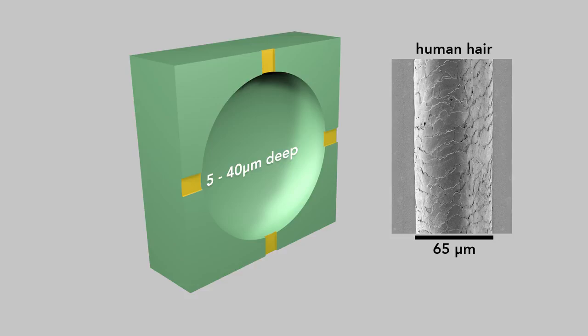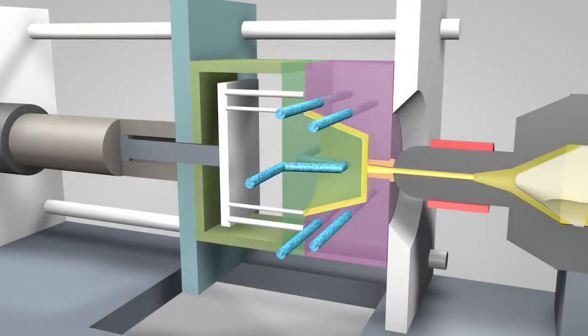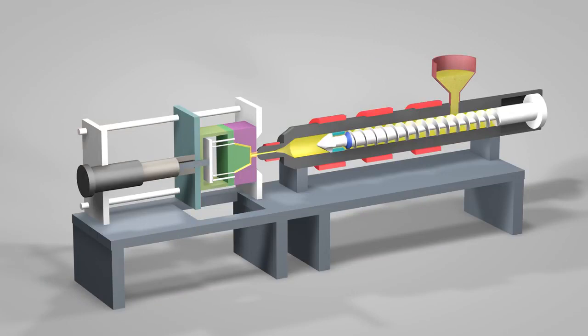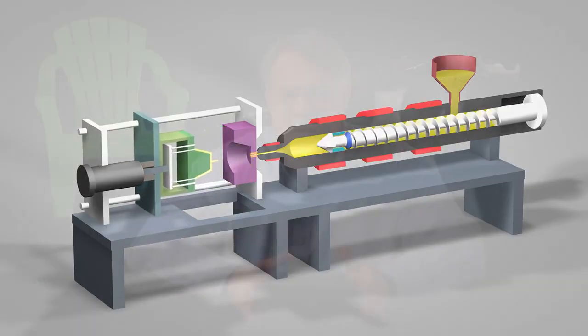To speed the plastic solidification, coolant, typically water, flows through channels inside the mold just beneath the surface of the interior. After the injected part solidifies, the mold opens.